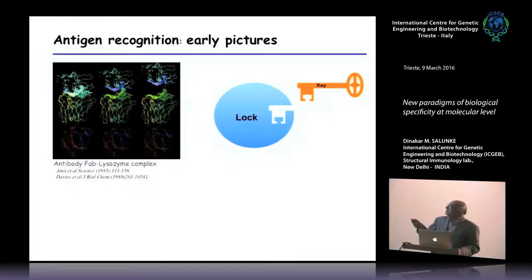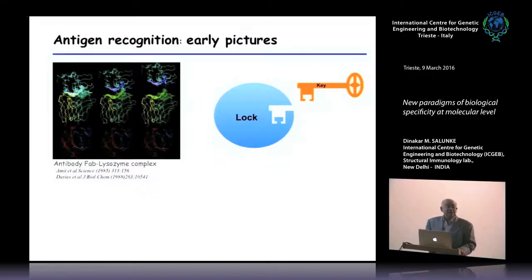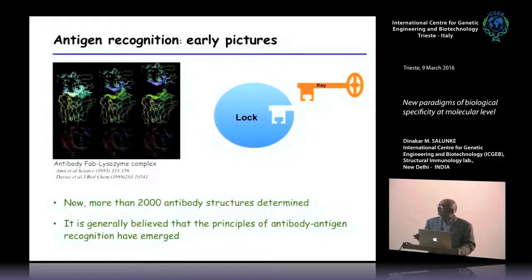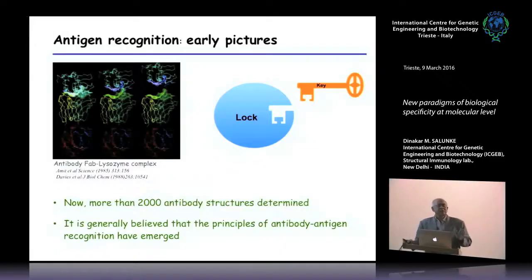The logic is that specificity is defined in terms of shape and charge complementarity, akin to a lock and key. For every surface feature of the antigen molecule, an antibody is generated. At the molecular level, what Landsteiner illustrated 50 years ago became quite evident, and it is generally believed that we understand how the immune system discriminates between self and non-self, and between two different foreign entities.